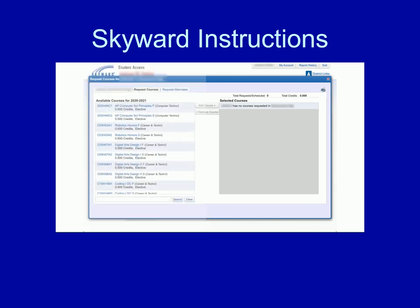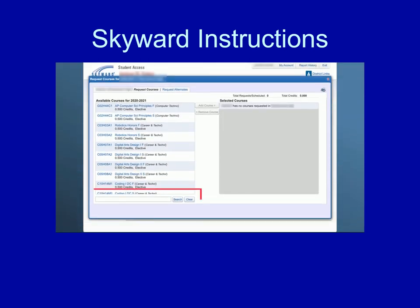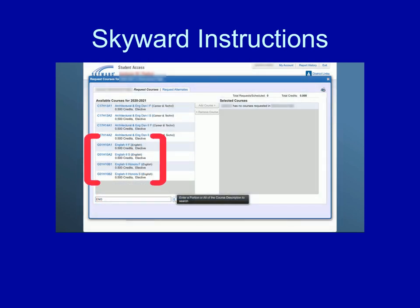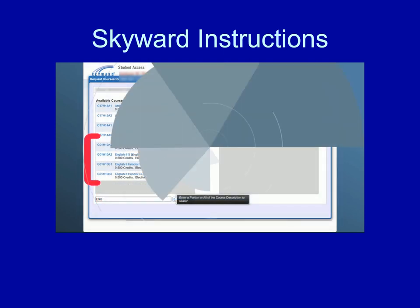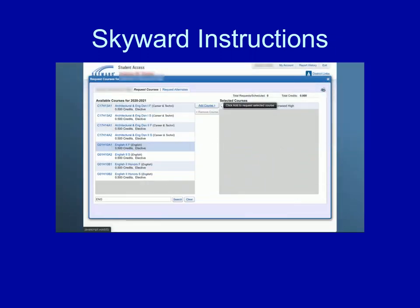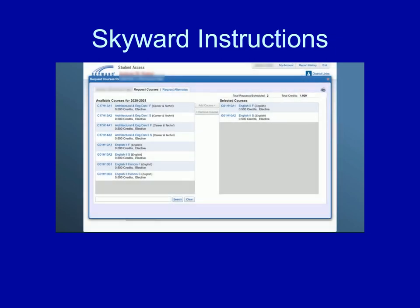You will also see a search box at the bottom of the page. Use the search box to locate a course. For example, enter ENG into the search box to see all of the English courses that are available. Once you locate the course that you need, select it by clicking on it, then choose the Add Course button located between the two columns. Your chosen course will now be listed in the Selected Courses area.